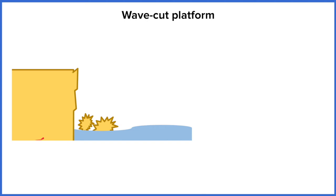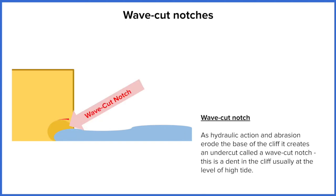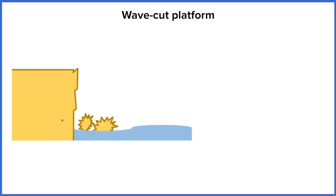The notch has been eroding away, and now this area above it is more unsupported. It's heavy rock, so eventually it collapses into the sea. This is cliff retreat — this area has now collapsed and the edge of the cliff is now further back towards the coast.